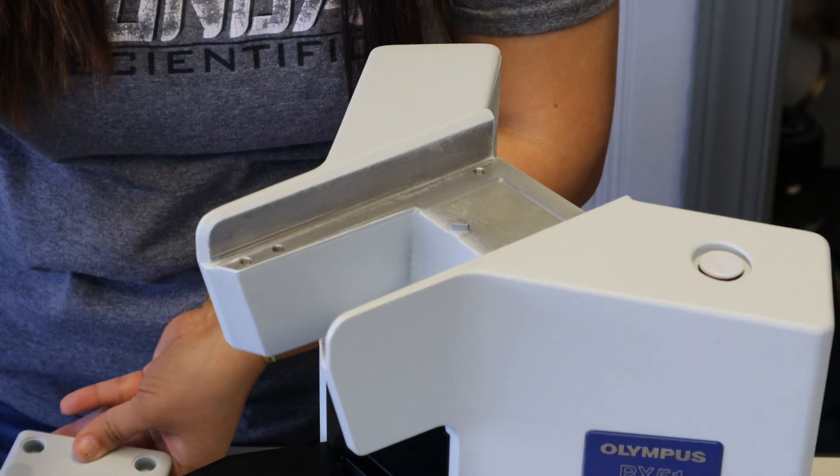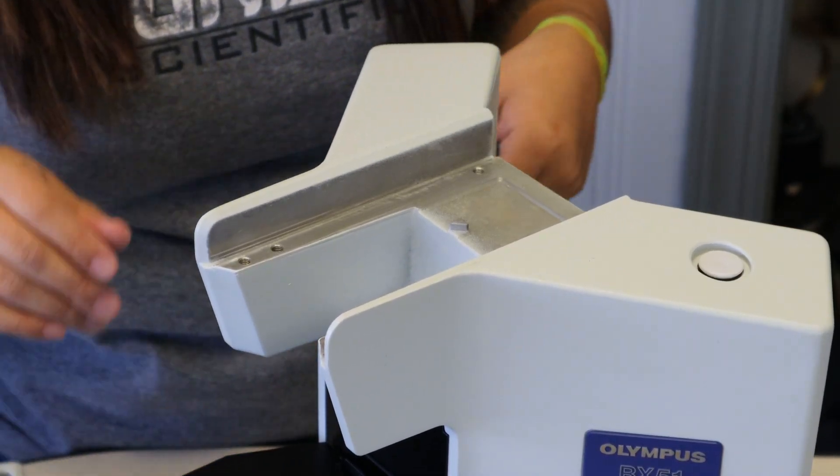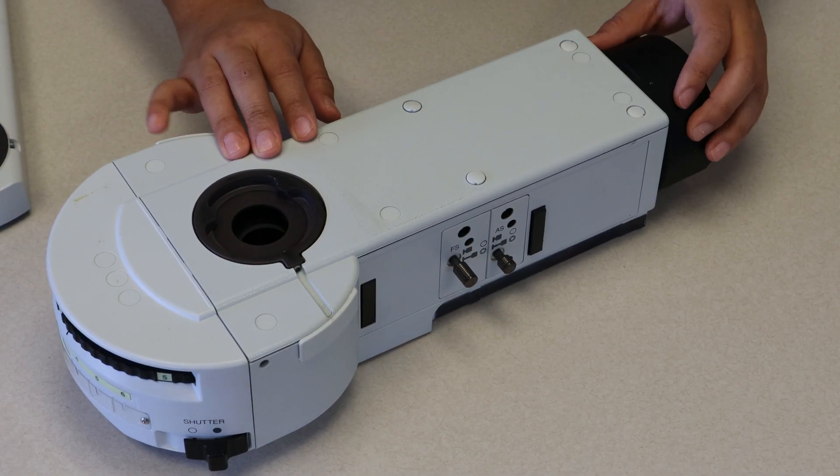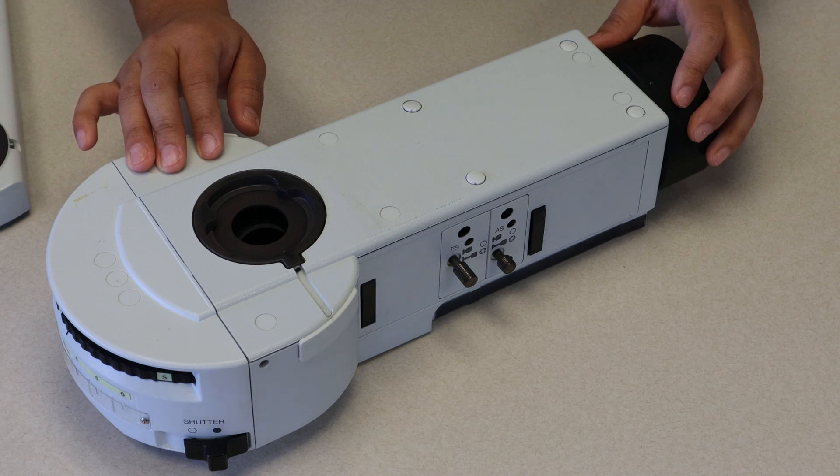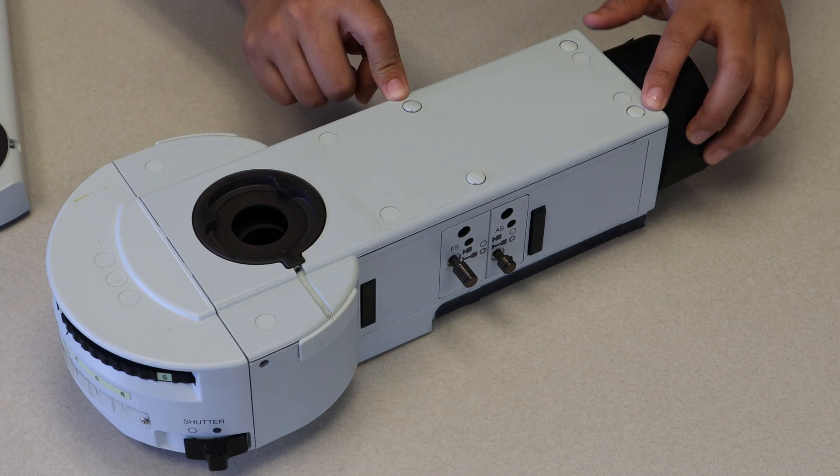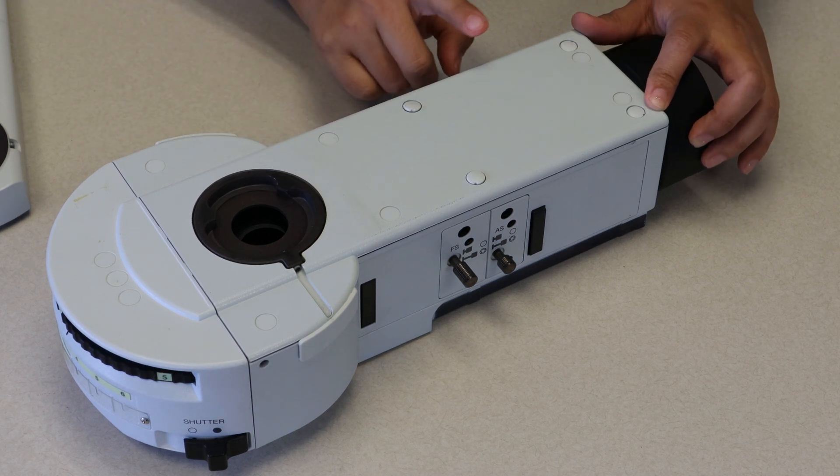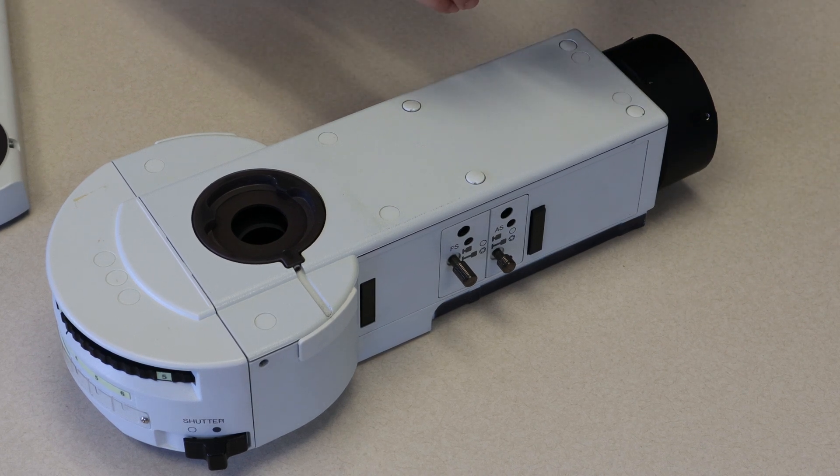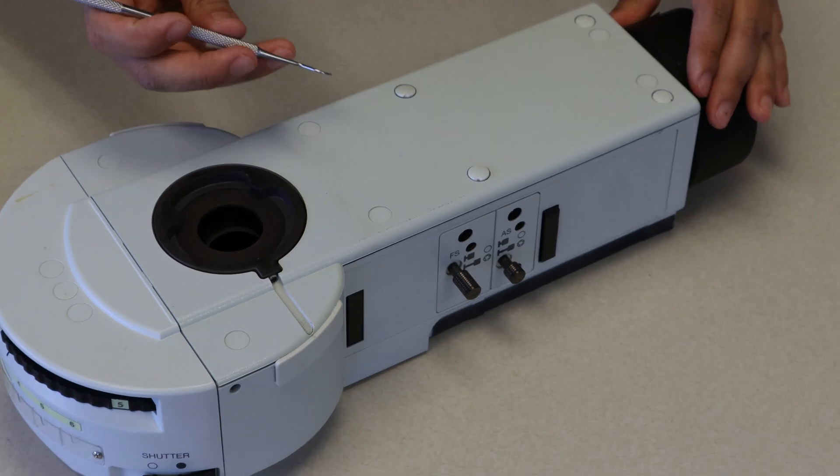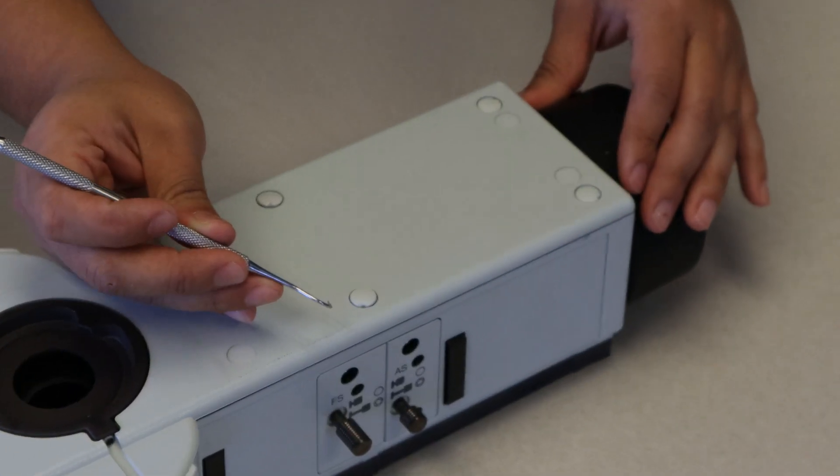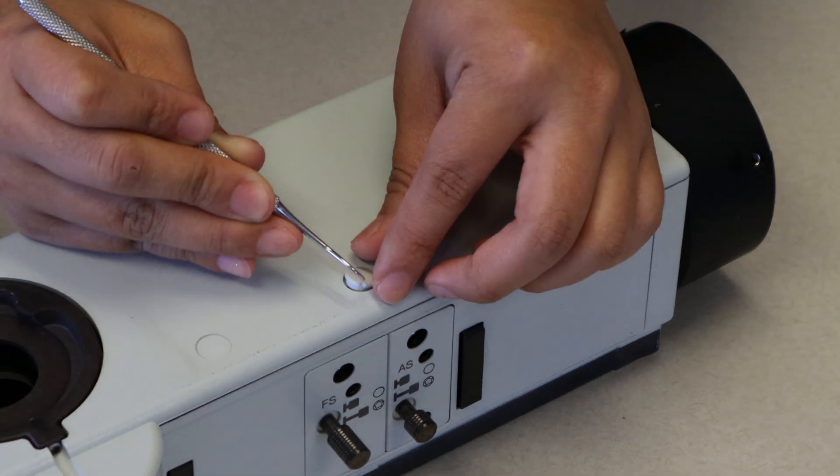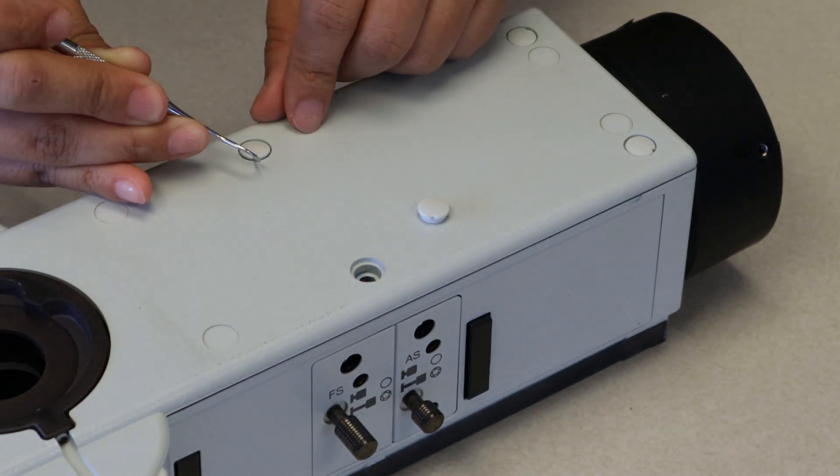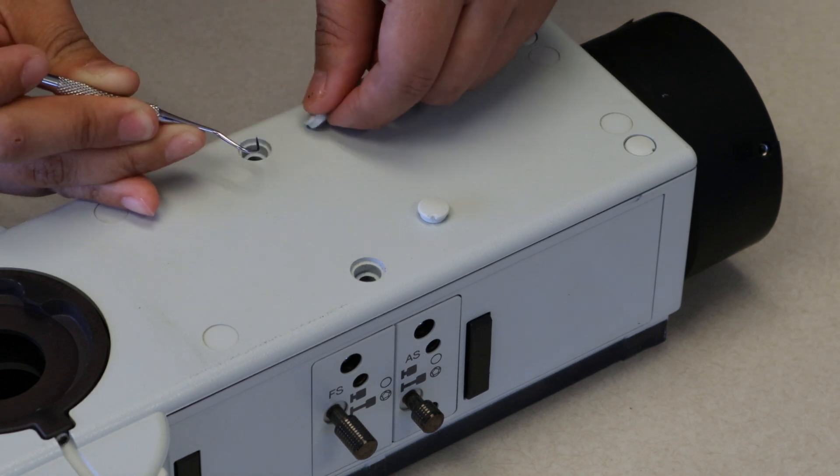Now we're going to move on to installing our fluorescence attachment. So here we have our fluorescent attachment. We're going to go ahead and use our little pick tool to remove the four covers over the captive screws in the top of this attachment. And once we get those out of the way, I'm going to take a second to pop them out, you'll be able to bolt on your fluorescent attachment to the original stand. Just move this up to the side so you don't lose them. Next we're going to be showing you how to put this attachment on top of the microscope.